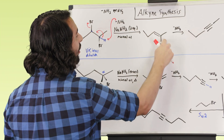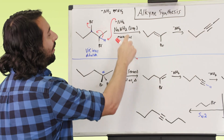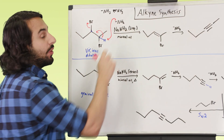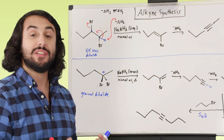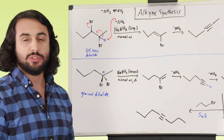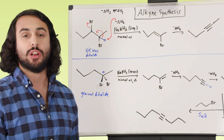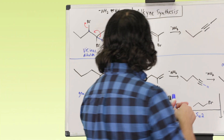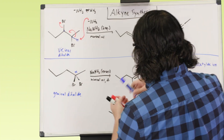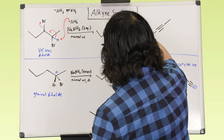So that gets us to the alkene, but we still have one more bromine on there. And we are going to run this with two equivalents — if we're going to do a double dehydrohalogenation, we're going to need two equivalents of base. And so that's actually fine.